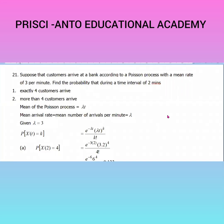Welcome to Prissy Anto Educational Academy. In this session, I am going to explain the problems in Poisson process. Suppose that customers arrive at a bank according to a Poisson process with a mean rate of three per minute.